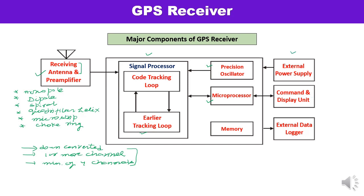Regarding the power supply: first-generation GPS receivers consumed very high amounts of power, but modern receivers are designed to consume very little energy. Earlier, first and second generation receivers required high power and used external power supplies. Nowadays, most modern receivers have internal rechargeable nickel-cadmium batteries. Memory is also required for post-processing operations — data needs to be stored and may use internal or external memory devices.